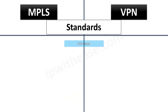On the OSI layer, MPLS works between Layer 2 and Layer 3, where the labels are inserted. On the other hand, VPN is an application layer technology and works on Layer 7.